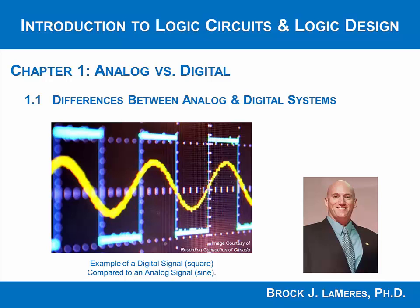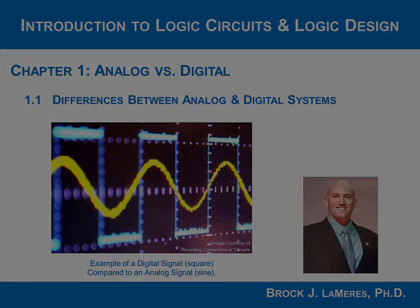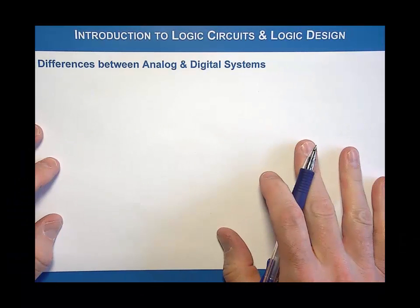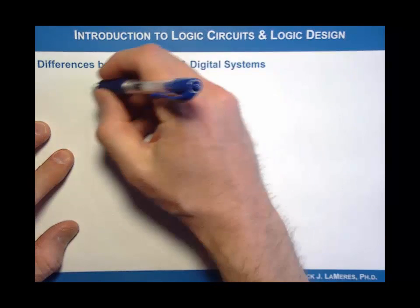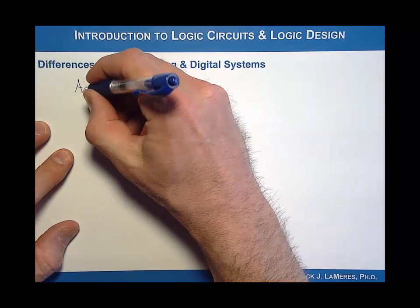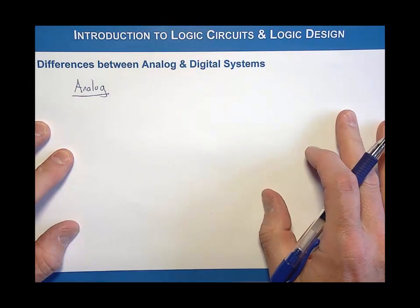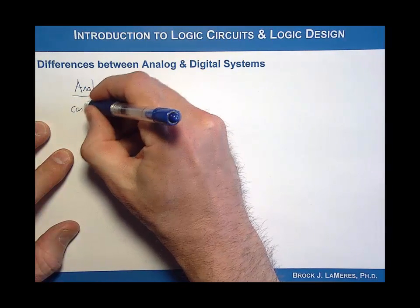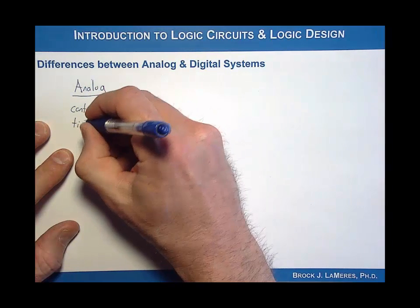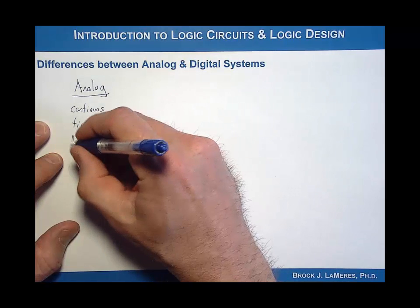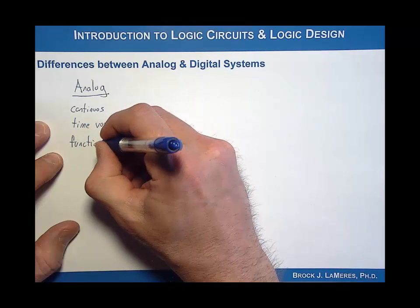What we want to do is start looking at what it is to be a digital system. By doing that we typically start with what is an analog system. So let's take a look at what an analog system is and then compare it to what a digital system is. An analog system is a continuous time-bearing function of the information it represents.